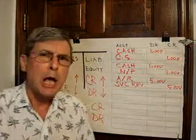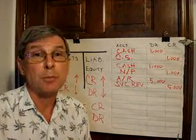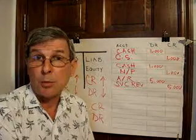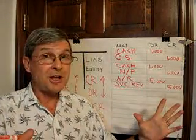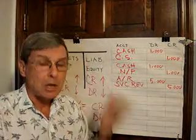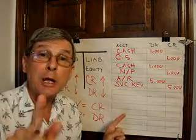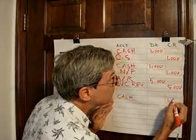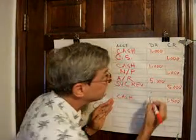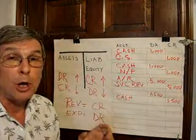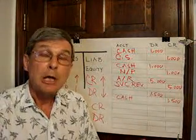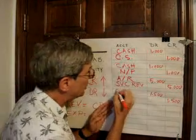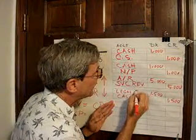Now let's say I need to go visit the lawyer to deal with legal issues of my business. I sit down with the lawyer, he handles all these affairs, and I pay him $1,500 on the spot. Cash changed hands? Yes — cash went out — so that would be a credit to cash for $1,500. We're going to have a debit to something. My business has incurred an expense — legal expense — and we know that expenses are always debits. So we debit legal expense for $1,500.